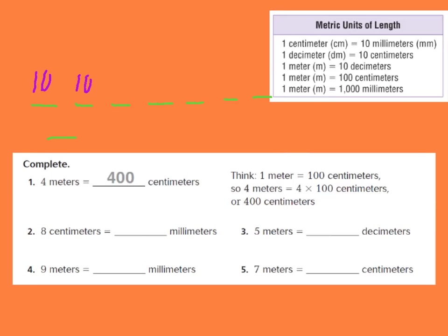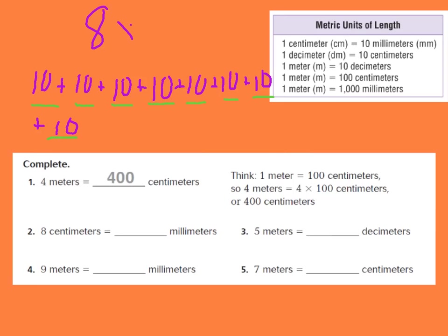So each centimeter equals 10 millimeters. I have eight centimeters, and each one equals 10 millimeters. I can add up all my tens, or say eight times 10: 10, 20, 30, 40, 50, 60, 70, and 80. So eight times 10 equals 80. There are 80 millimeters in eight centimeters.